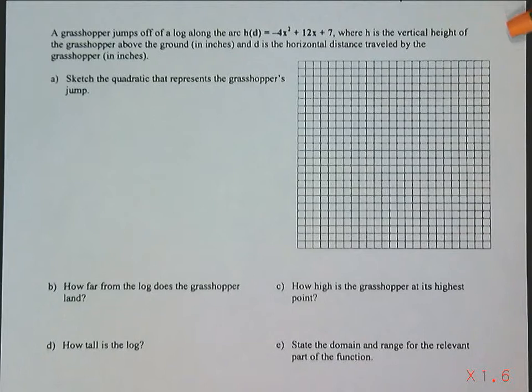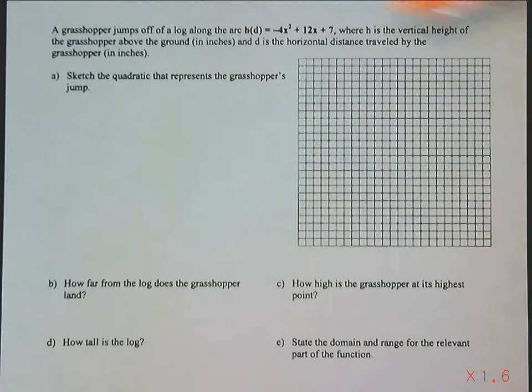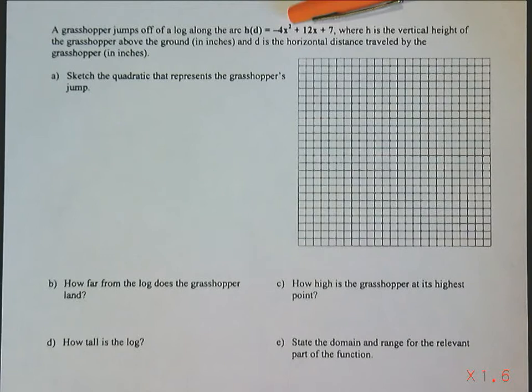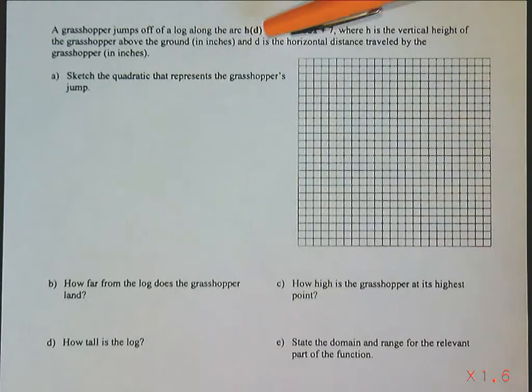The last part of our lesson on sketching by intercepts is a word problem. It says a grasshopper jumps off a log along the arc h at d, which is just notation. h at d just means height, where h equals negative 4d squared plus 12d plus 7, where h is the vertical height of the grasshopper above the ground, and d is the horizontal distance traveled by the grasshopper in inches.